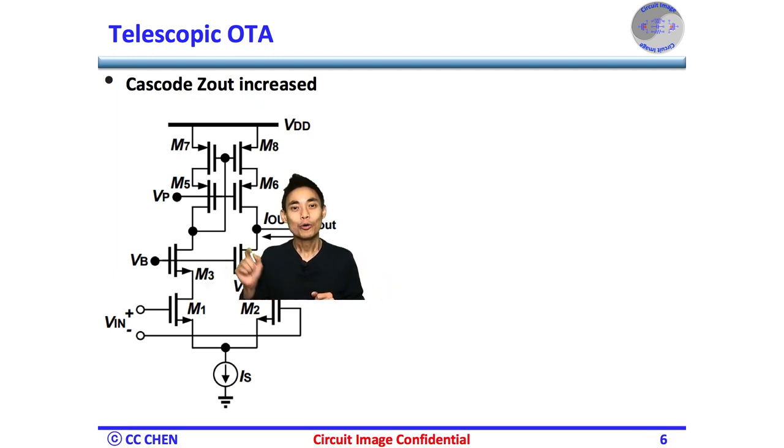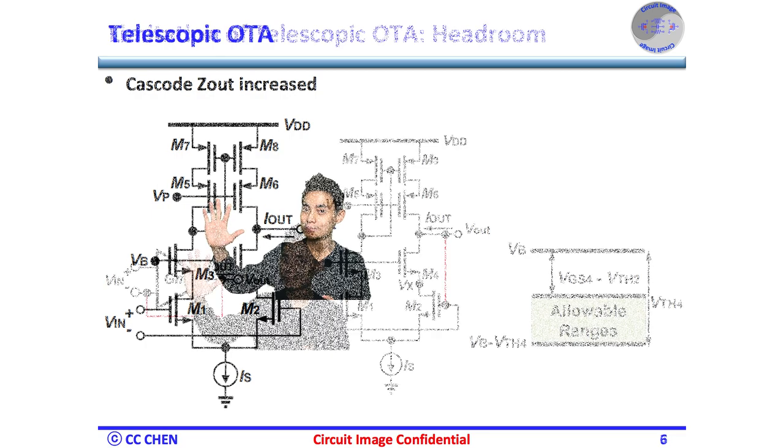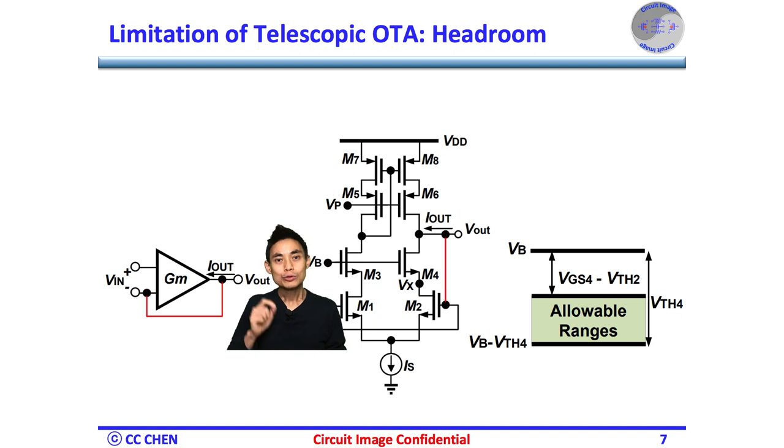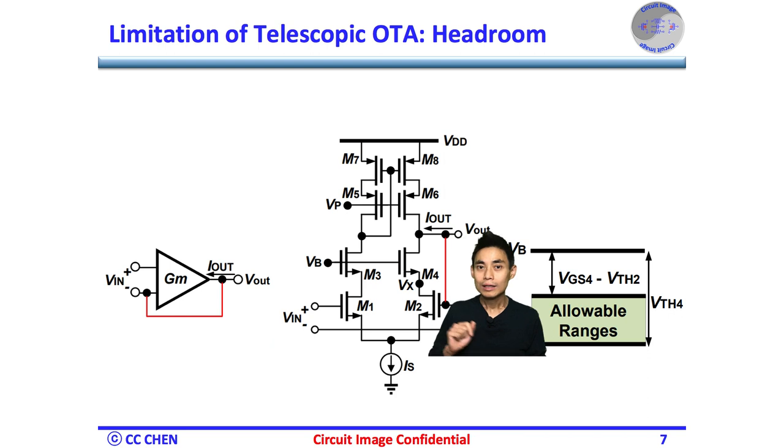Unfortunately, we might introduce another issue in the telescopic OTA. What is it? Think about your cascode limitation diagrams for 5 seconds. Correct, we may need to connect the OTA in a feedback loop much often. Second, the OTA diagram shows you that M4 and M2 would constrain the output swing range. First, for M2, the VR must be less than VX plus one threshold voltage VTH2 to keep M2 in saturation region.